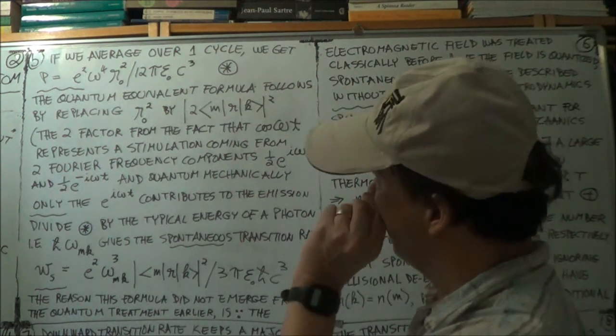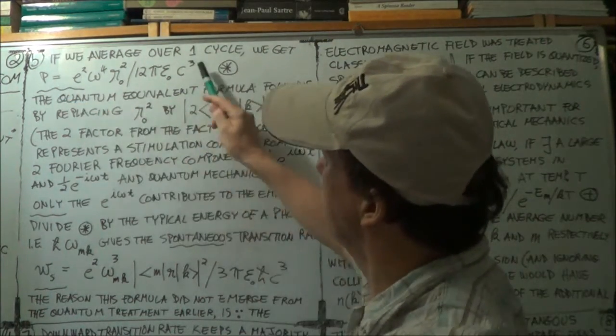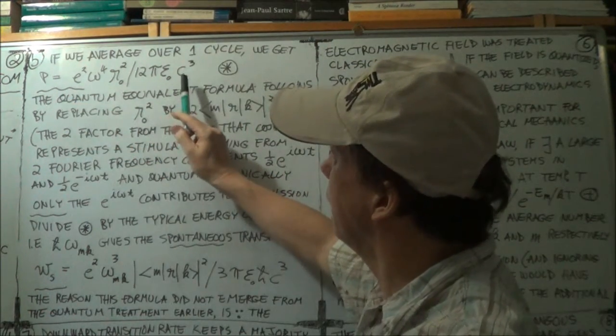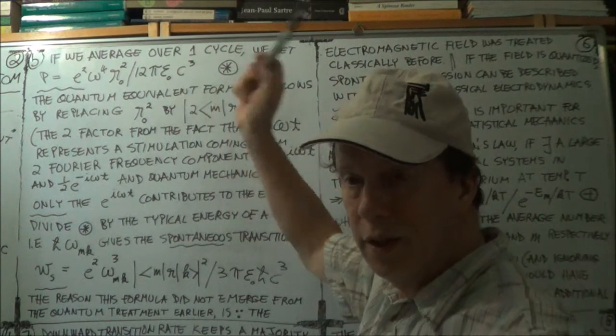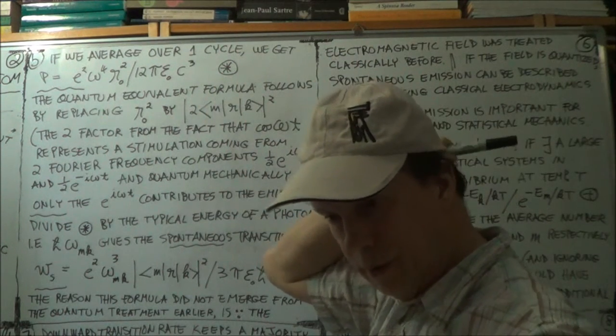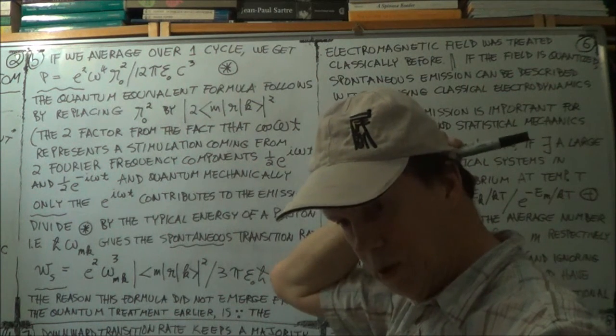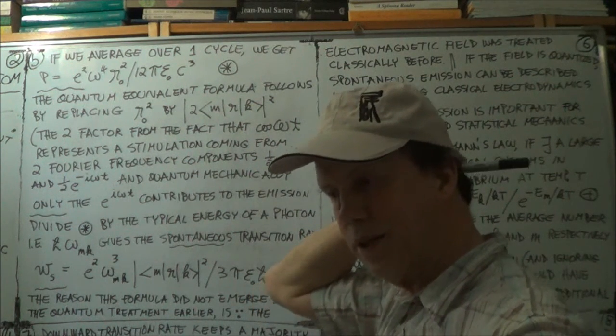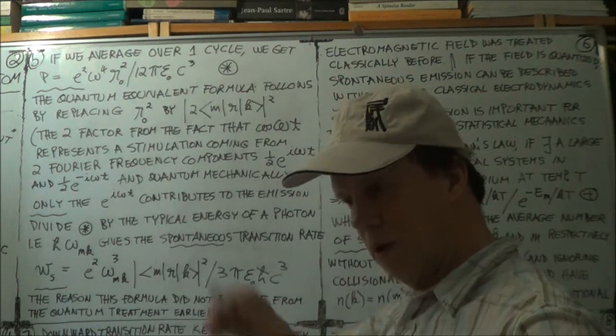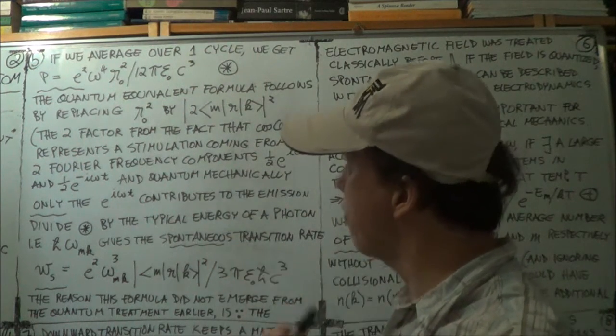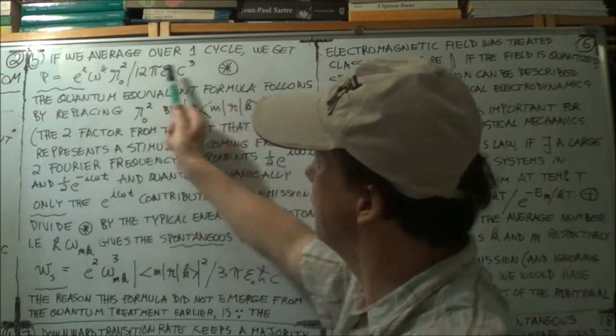Okay, so now you've got a power formula for classical mechanics of the energy emitted per unit time, averaged over a single cycle for an oscillator, just a charge doing this. It's this.